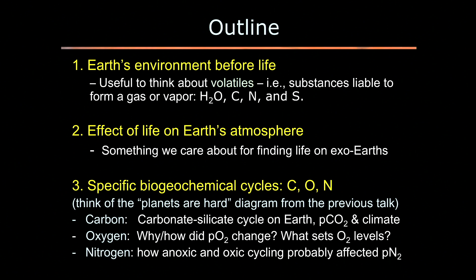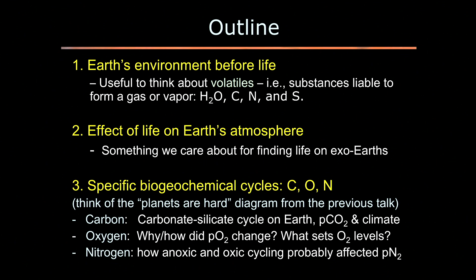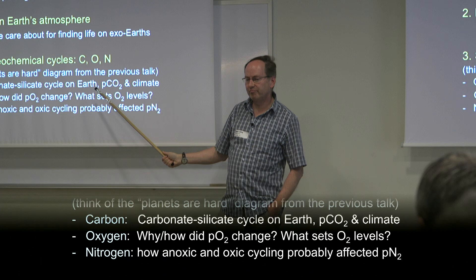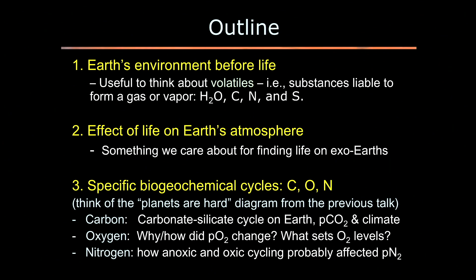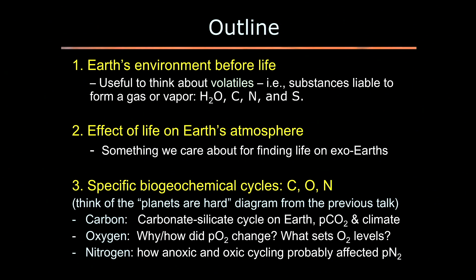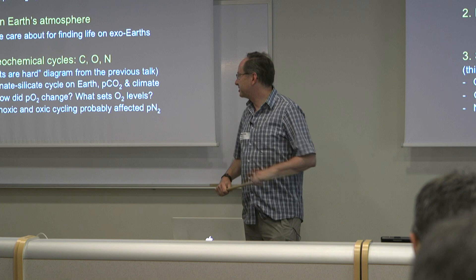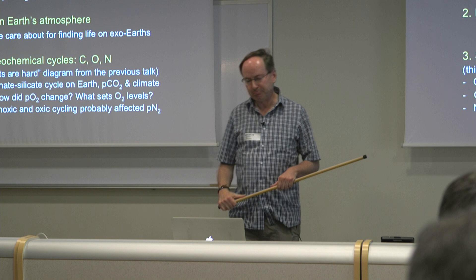Rory Barnes' 'planets are hard' diagram, with all those boxes and lines, comes from biogeochemistry — the connection of the biosphere to the geology and chemistry of an Earth-like planet. When we think of life, it's made from the so-called CHNOPS elements: carbon, hydrogen, nitrogen, oxygen, phosphorus, and sulfur — with carbon, oxygen, and nitrogen being especially important. I'll discuss those cycles given the limits of time; sulfur and phosphorus are more specialized.